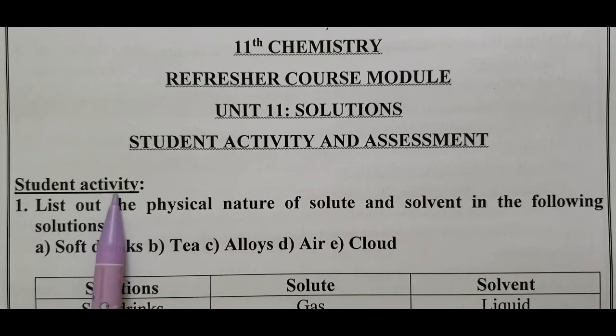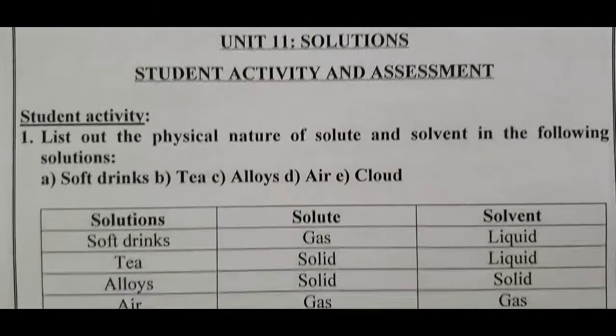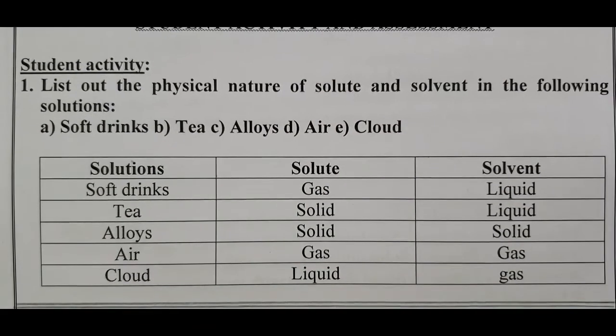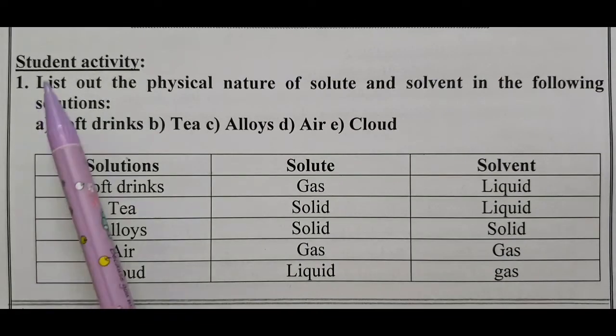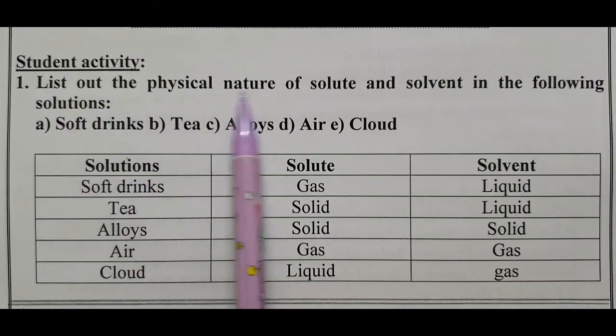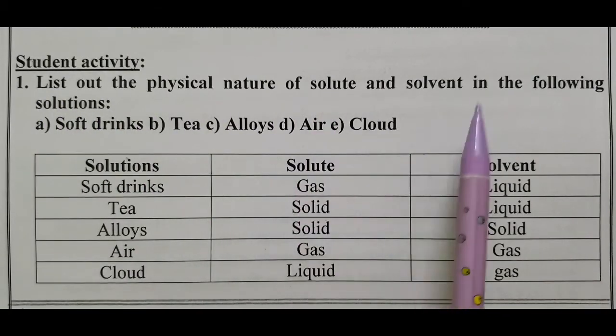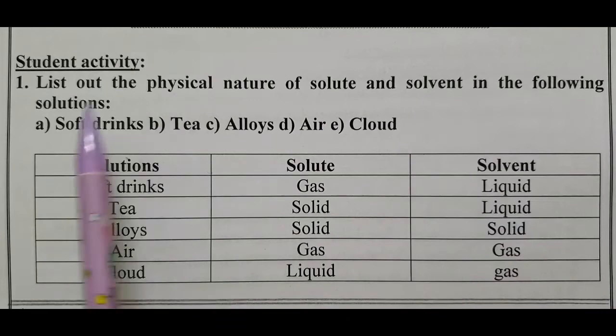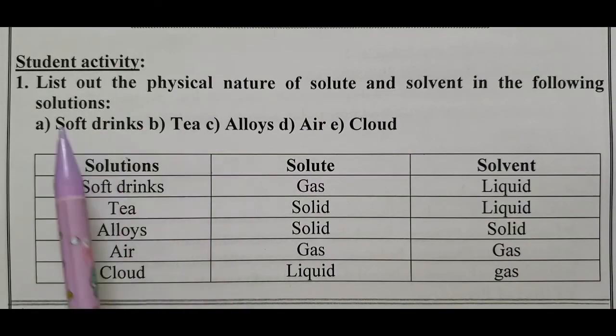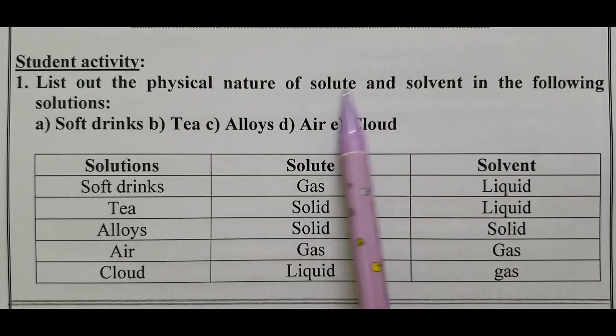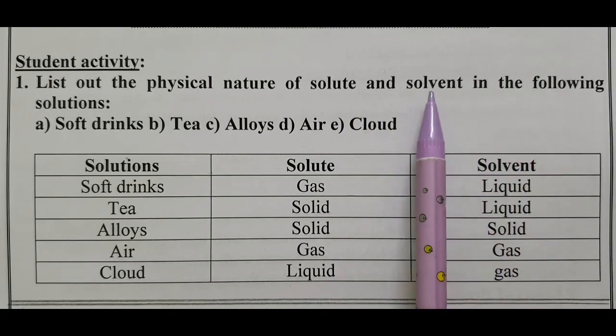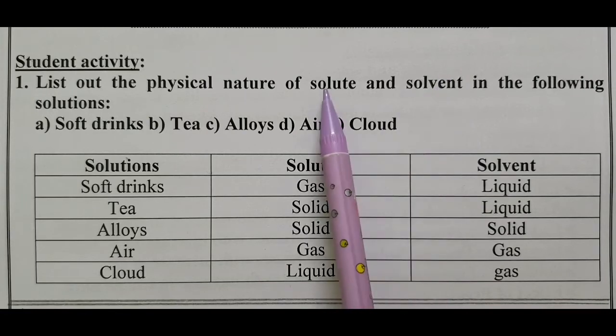First, come to student activity. Question one: list out the physical nature of solute and solvent in the following solutions. We know a solution is made up of two components - one is solute and another is solvent. Solvent is the large proportion in which solute is present in very smaller proportion.